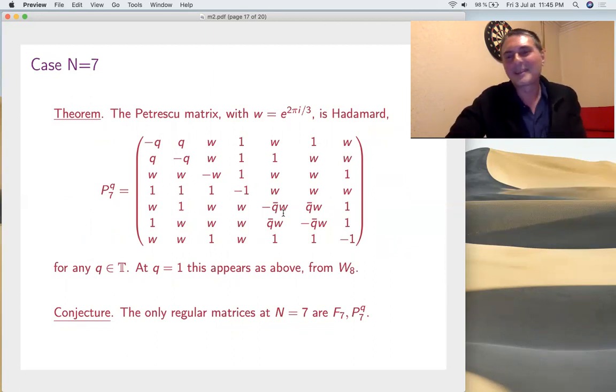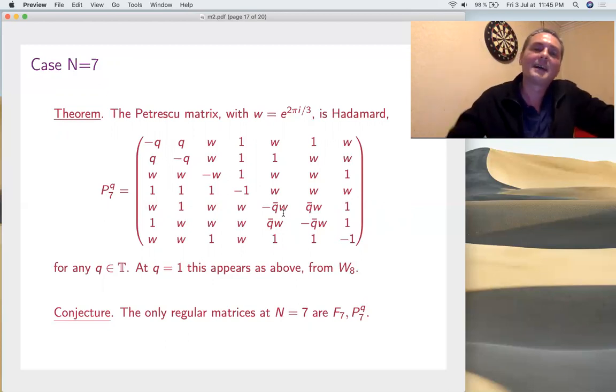So, at 7 now, back to classification. I have, of course, Fourier, but you have as well this Petrescu matrix depending on parameter, which originally was found as quite a very exceptional thing and a counter example to a normal conjecture. There's a whole story here on a computer, but actually something conceptual coming from the Selesny construction. And the conjecture is that the only regular matrices are F_7 and P_7 Q.